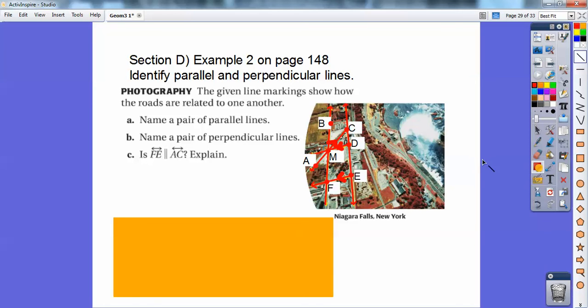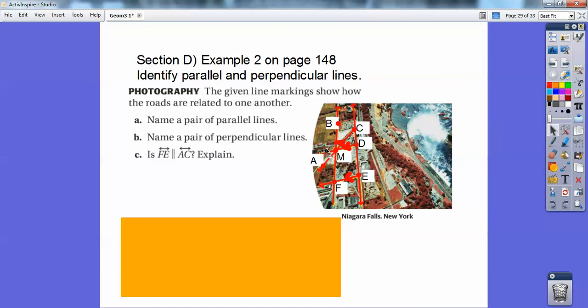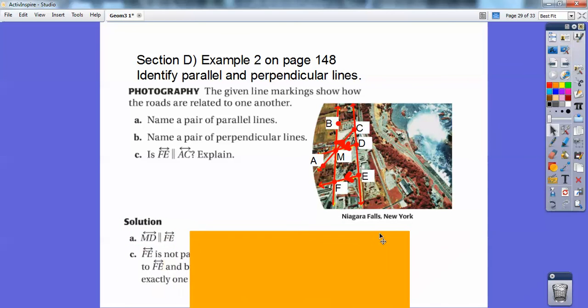So name a pair of parallel lines. The parallel lines are these guys, this line right here and this line right here. So you can say line AD, line MD, line DM or so on, and then FE. That's that one right there.